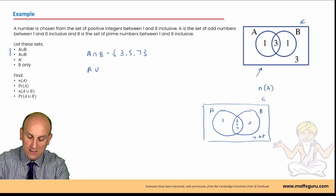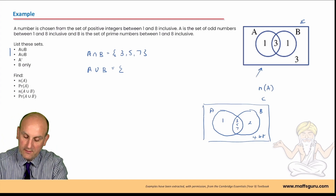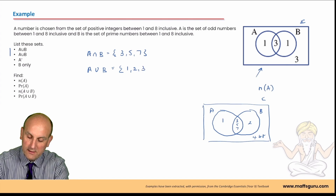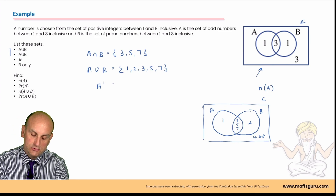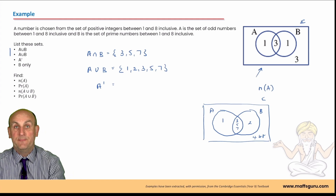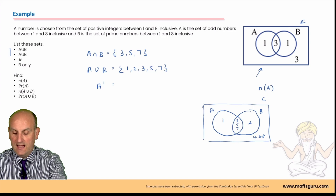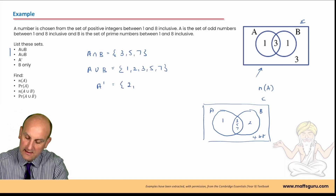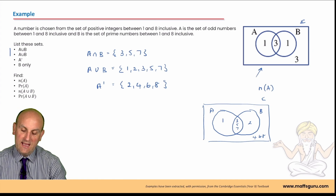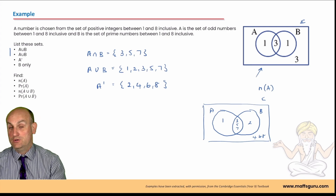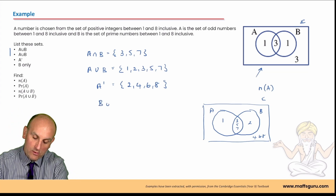A complement - A with a little dash - means all the numbers that are not in A. That means the numbers only in B and outside, so two, four, six, and eight. Note that A was the odd numbers, so the complement of odd numbers should be the even numbers - two, four, six, eight. Fist bump - correct! B only means only in B with no overlap with A, so that is just the number two.